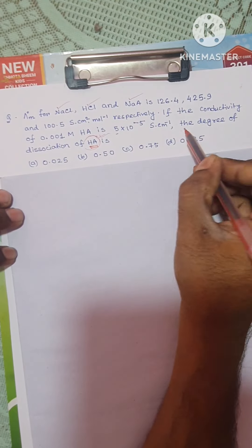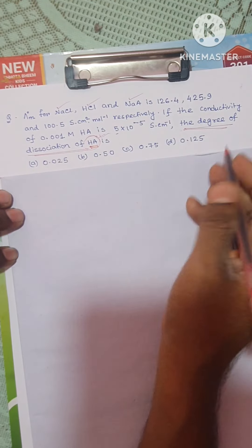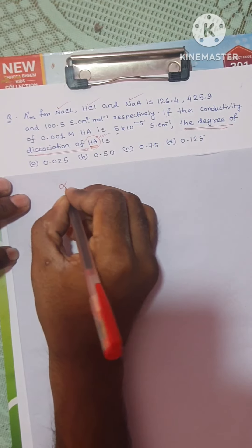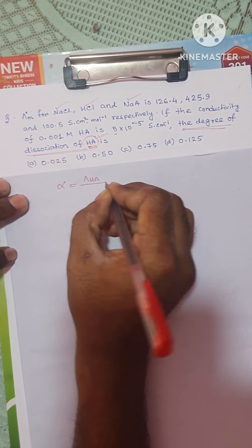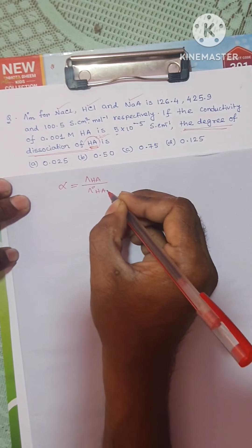To get the degree of dissociation, we can calculate it. The degree of dissociation can be calculated using the formula: alpha is equal to lambda HA by lambda zero HA.